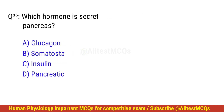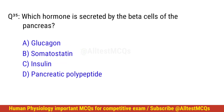Question number 35. Which hormone is secreted by the beta cells of the pancreas? The right option is C: Insulin.